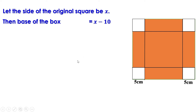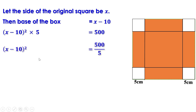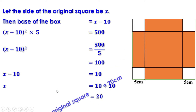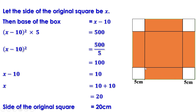Volume of a box is base area × height. The base is a square with side (x - 10), so base area is (x - 10)². The height is 5 centimeters, so volume = (x - 10)² × 5. One liter = 1000 cm³, so half a liter = 500 cm³. Therefore (x - 10)² × 5 = 500, giving (x - 10)² = 100. Taking square root: x - 10 = 10, so x = 20 centimeters. Verification: base = 10 cm, height = 5, volume = 10² × 5 = 500 cm³ = half a liter.